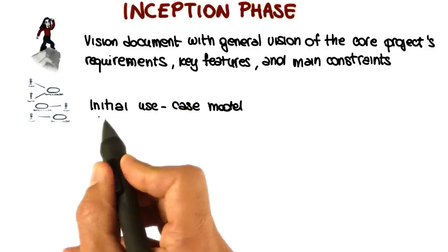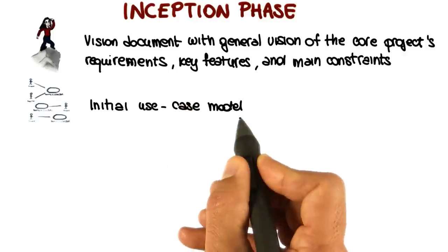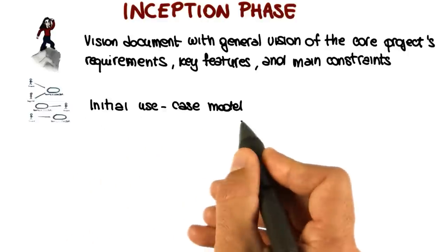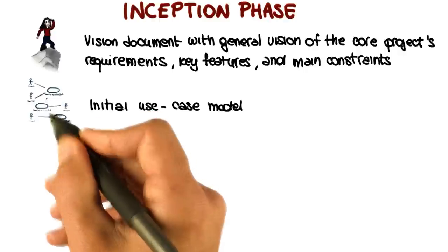Together with this, the inception phase also produces an initial use case model, as I just mentioned. So this is a use case model that includes an initial set of use cases, and they will be later refined.